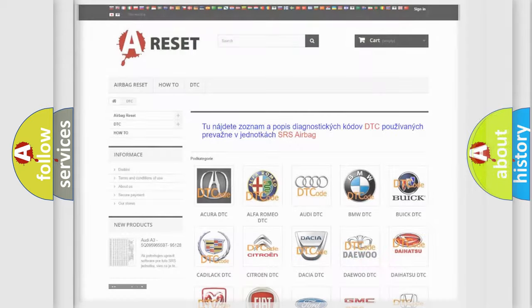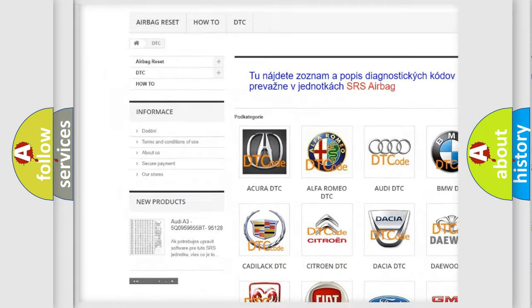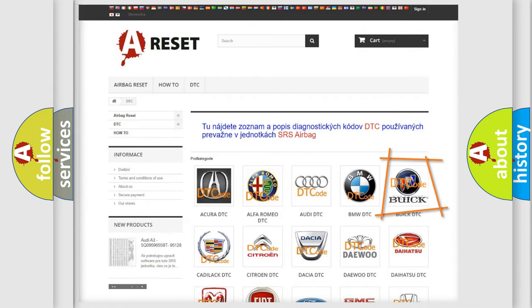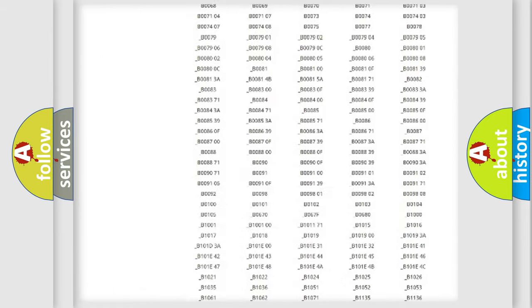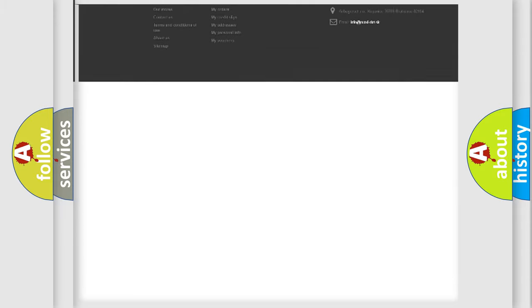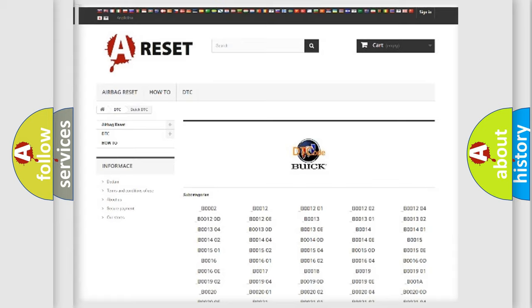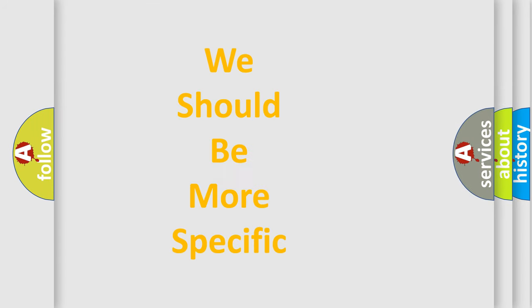Our website airbagreset.sk produces useful videos for you. You do not have to go through the OBD2 protocol anymore to know how to troubleshoot any car breakdown. You will find all the diagnostic codes that can be diagnosed in Buick vehicles. Also many other useful things. The following demonstration will help you look into the world of software for car control units.